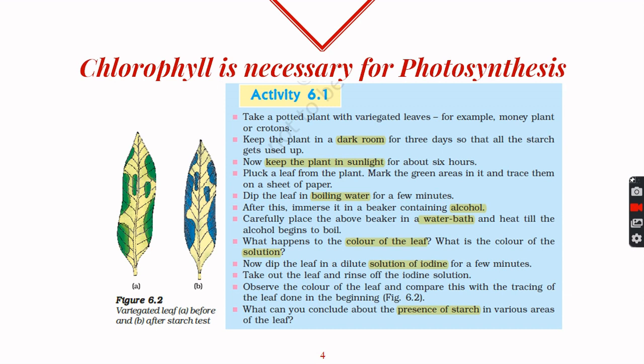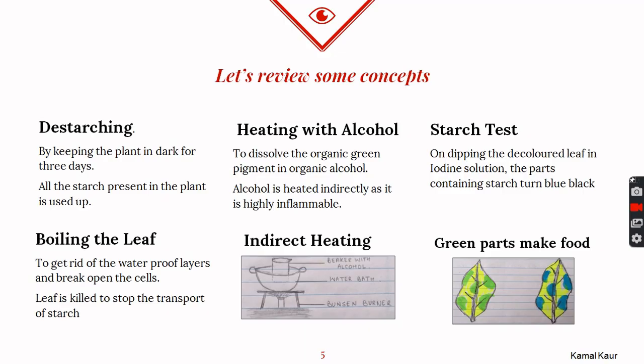This activity proves that chlorophyll is necessary for the process of photosynthesis. To review: destarching is done to use up all the starch present inside the plant by keeping it in dark for at least three days. The leaf is boiled to get rid of the waterproof layers and break open the cells, and also to kill the leaf so as to stop the transport of starch.